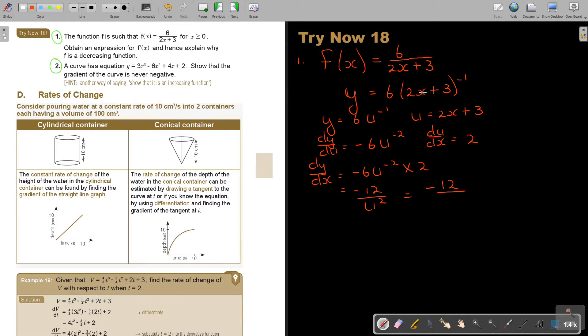And if I multiply, so dy/dx is negative 6u^(-2) times 2. So it's negative 12. And now it's just u to the power of 2 which is giving me negative 12. And u, what is u? Don't forget there is u. That will be 2x plus 3 square.